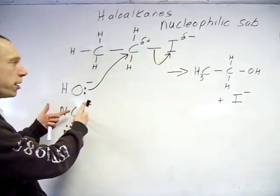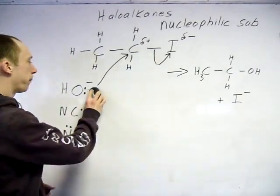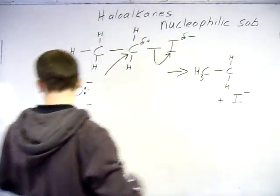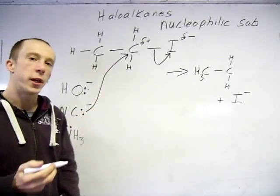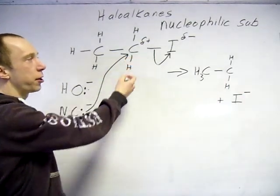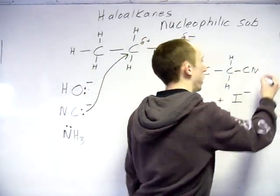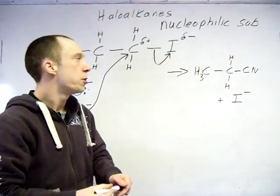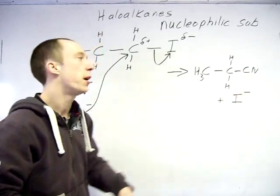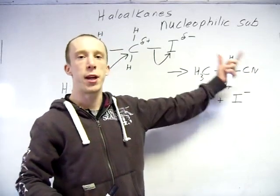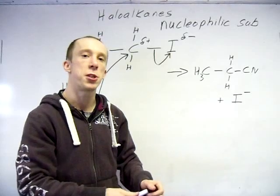You can see where the name for the mechanism comes from - the nucleophile is substituting for the halogen, replacing it, hence 'nucleophilic substitution'. It'll be exactly the same if I use the cyanide ion instead. Again, start at the lone pair, attack the carbon, halogen leaves, and the nucleophile sticks on the end. The reason this is useful is because we can get quite a variety of different functional groups: we can make alcohols, nitriles, or amines depending on which nucleophile we use.